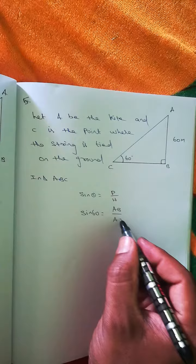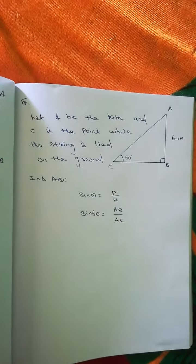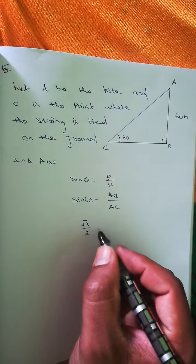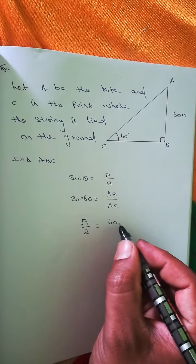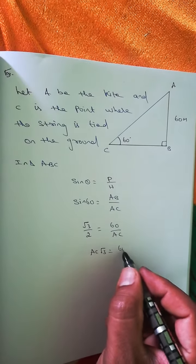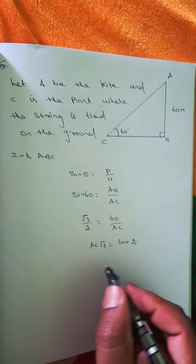Sine 60 equals root 3 by 2. AB is 60 meters and hypotenuse is AC. So sine 60 equals root 3 by 2 equals 60 by AC. We are going to find AC, so AC root 3 equals 120.